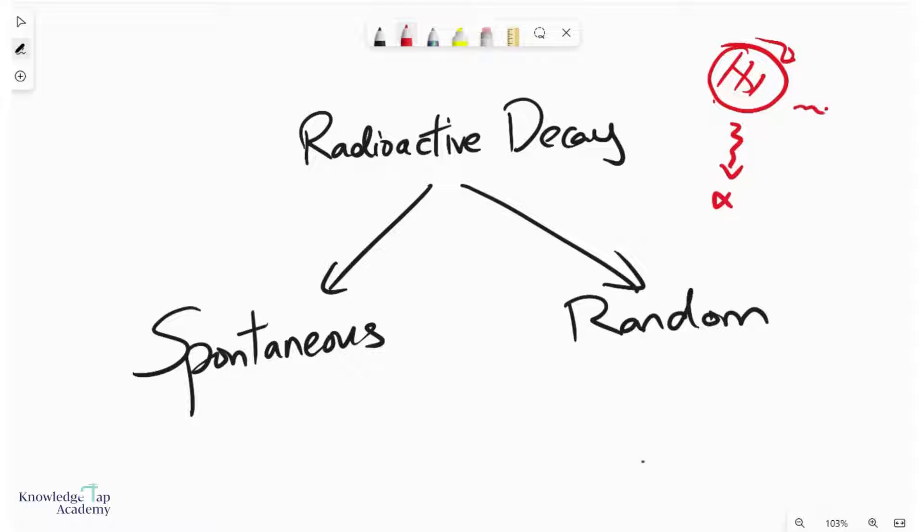That could be an alpha, beta, or gamma particle. Radioactive decay can keep happening until you reach something that is stable—eventually that means you reach iron-56. When we describe radioactive decay, we use two words: spontaneous and random.